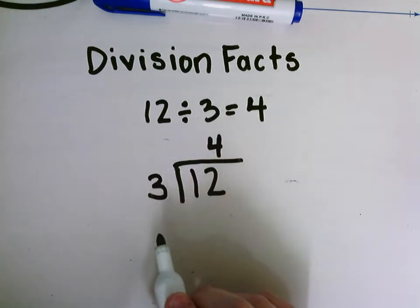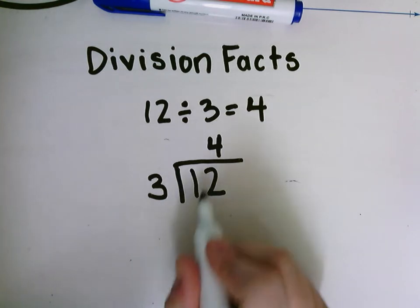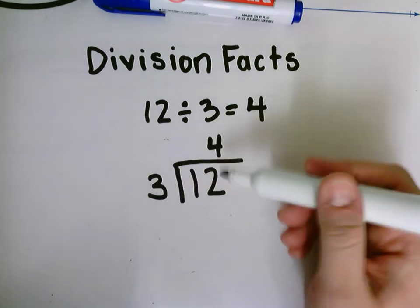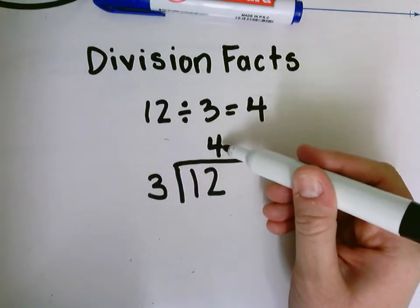So you see this long division box looks very different from other things that we've seen. First off we have a number inside a box, you have a number outside of the box, and we have our answer.